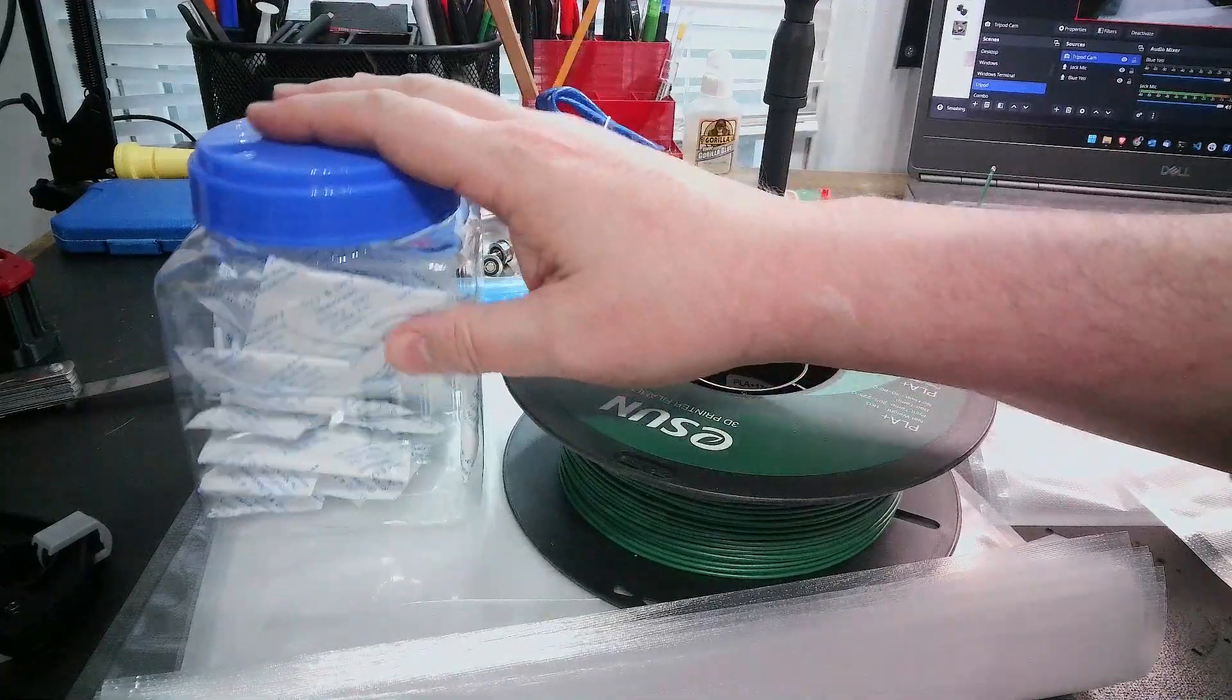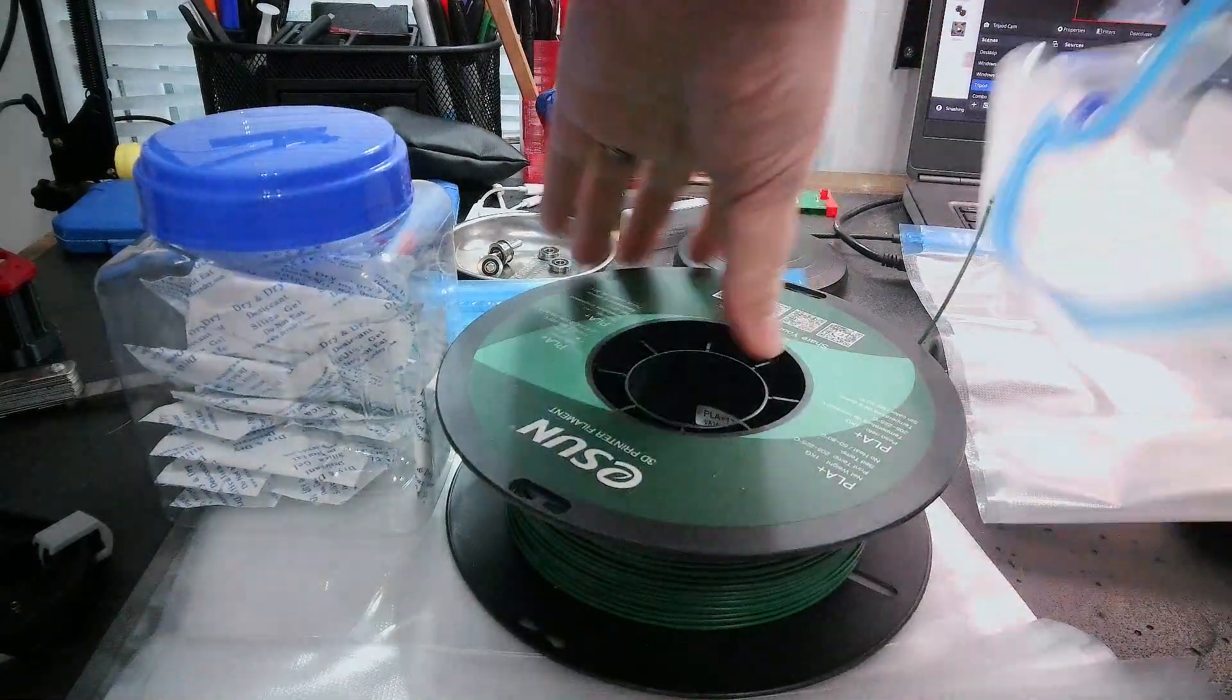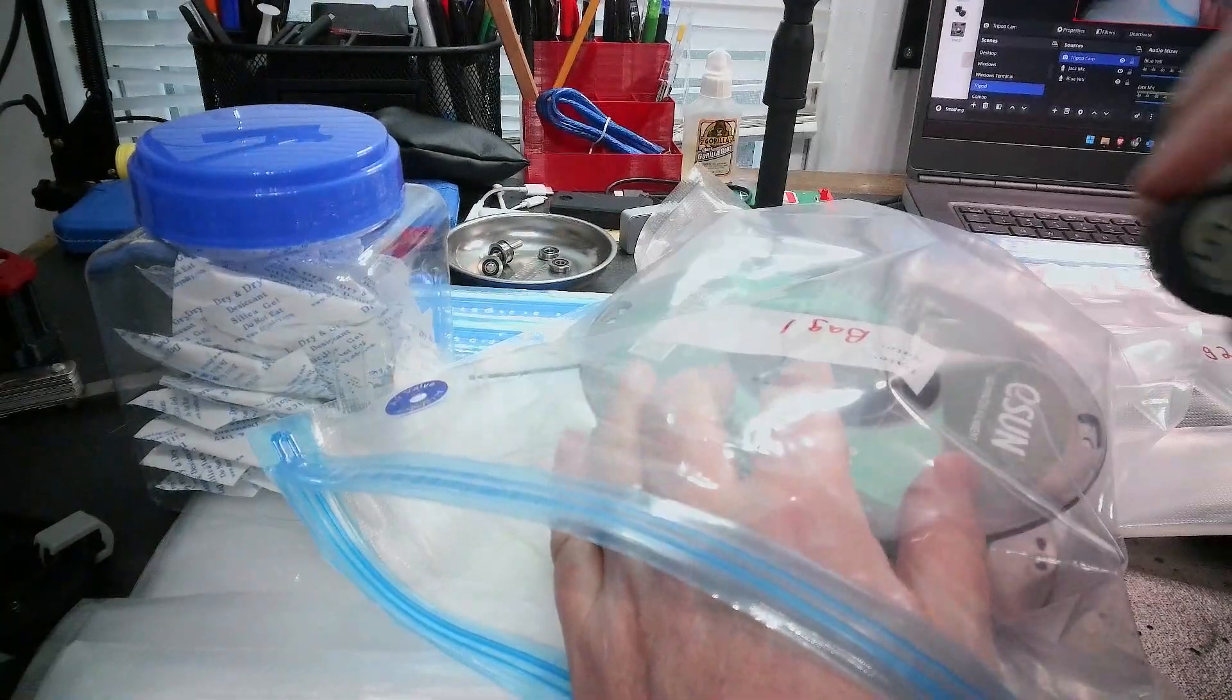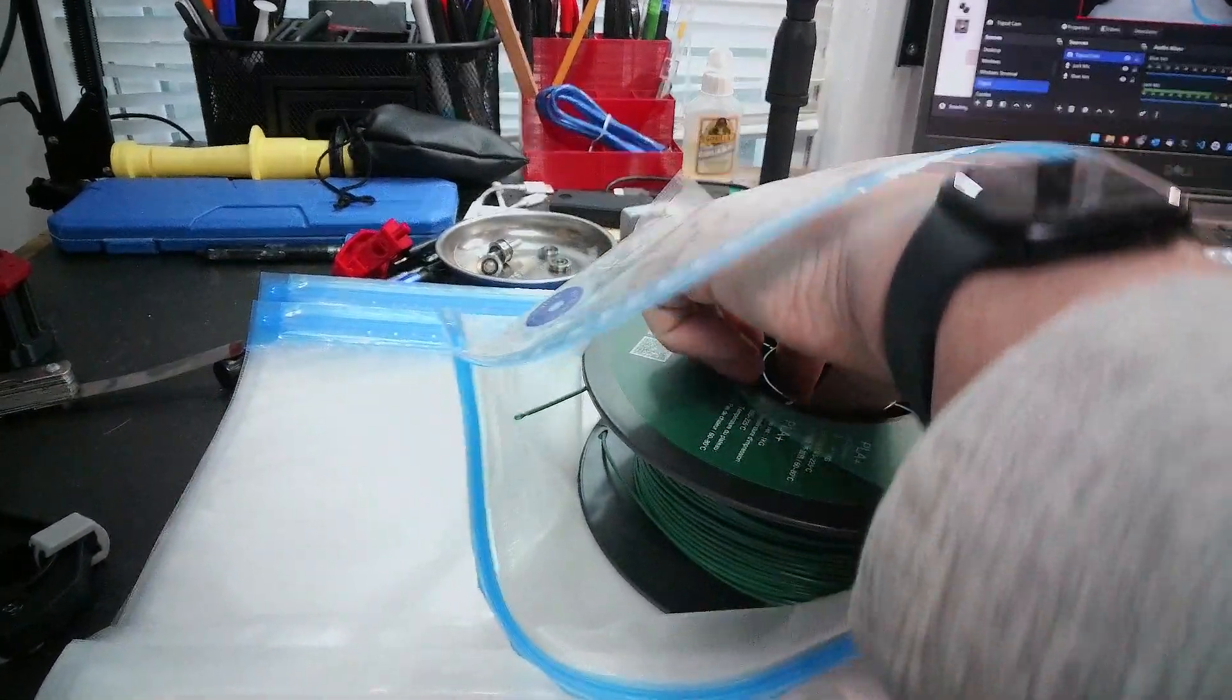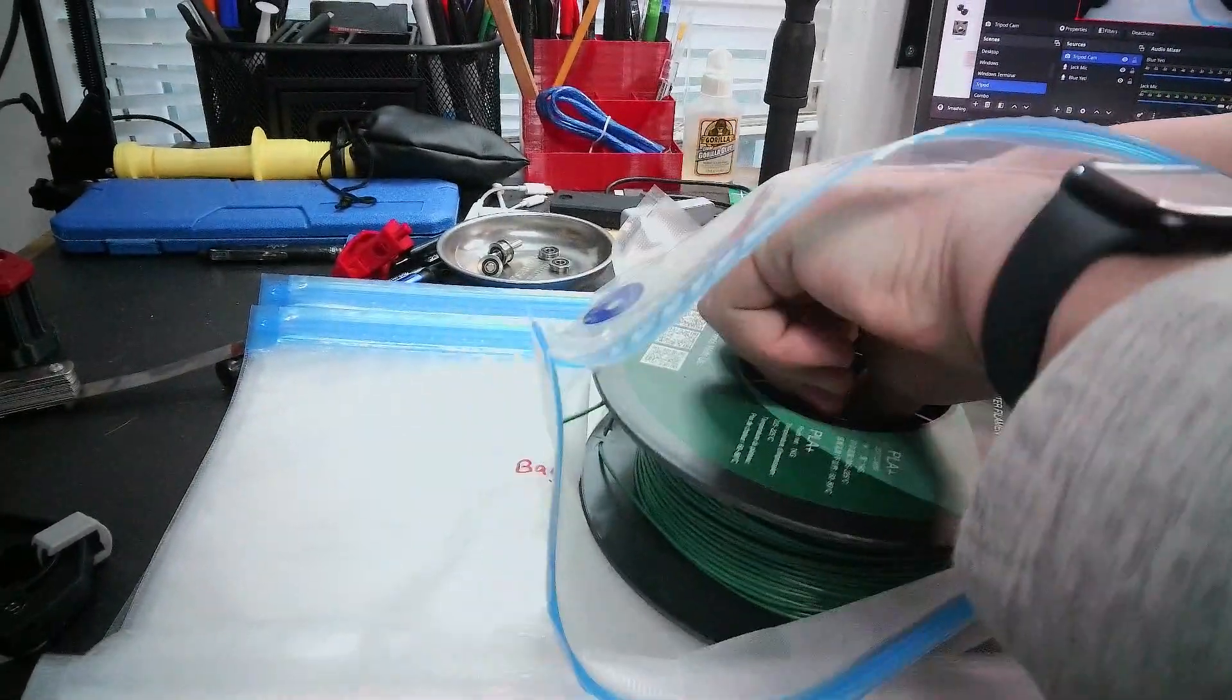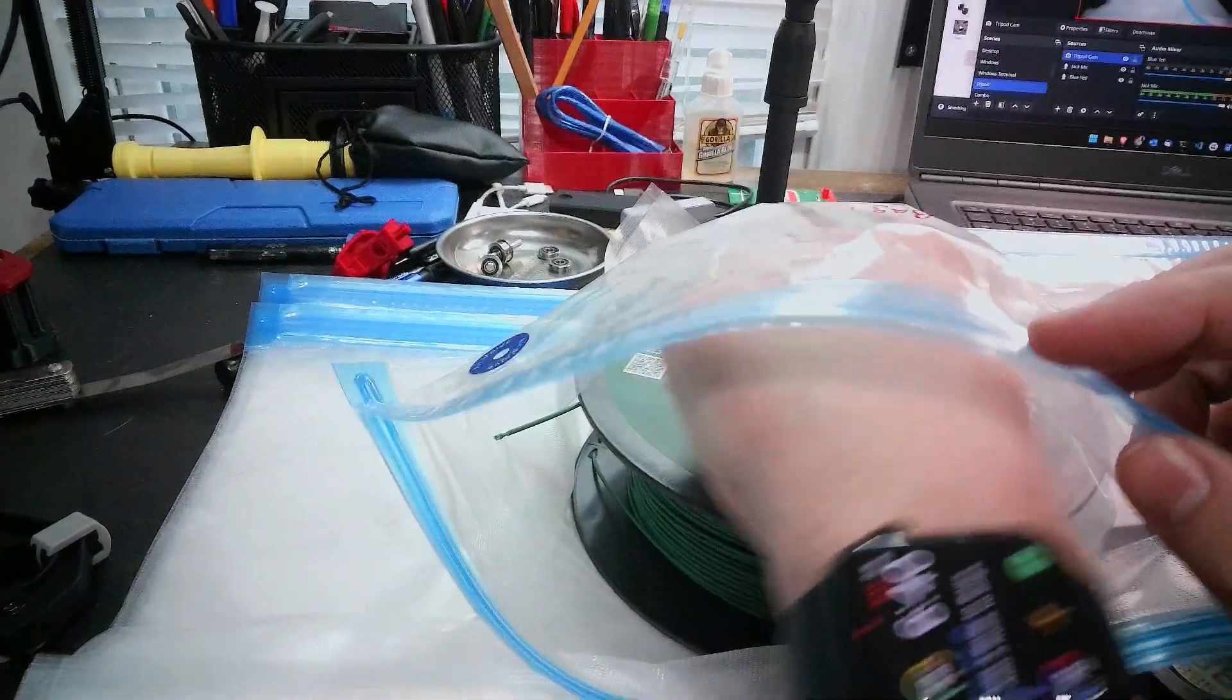So as you can see I keep my desiccant in a sealed container. I have a roll of filament that's been sitting out. I'm going to take my bag number one, place the filament in the bag, place the sensor here in the center, and let's do this.